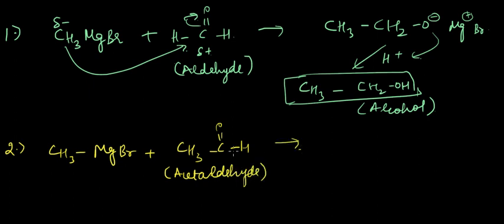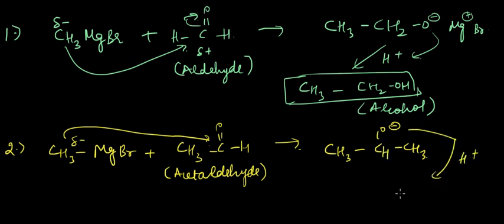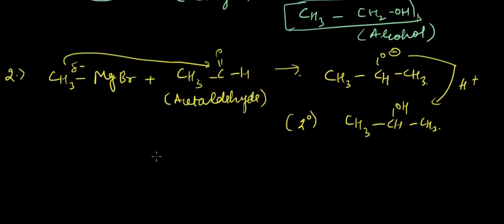And again this CH3 delta minus will act as a nucleophile here and would attach itself here, and we'll get something like this. And then we pass it in acidic medium, we will get something like a secondary alcohol - it's two degree alcohol.